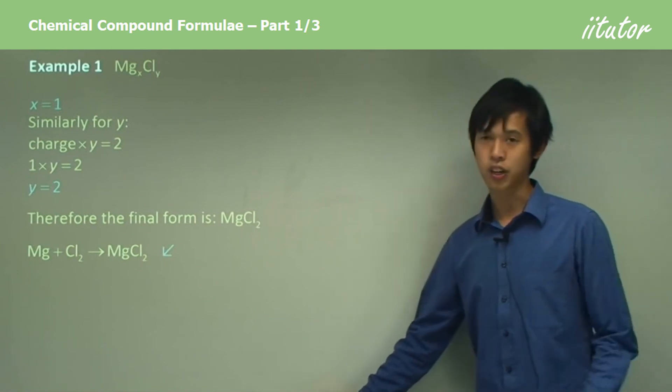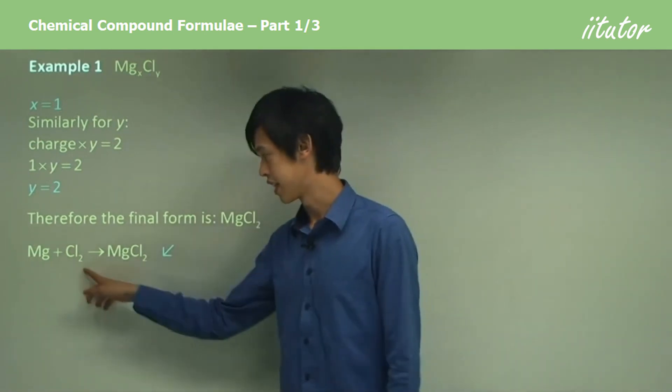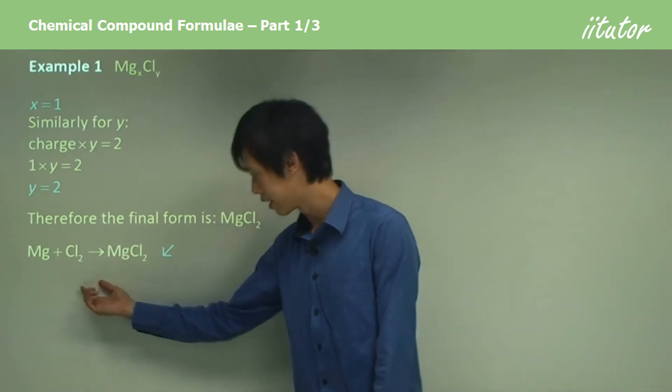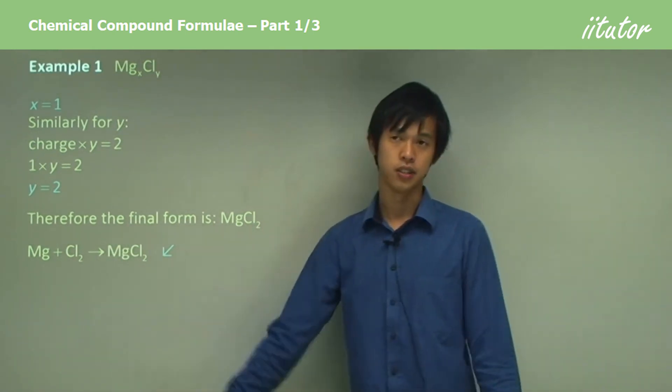The final equation then would be Mg plus Cl2, remembering that chlorine exists as a diatomic gas, that goes straight to MgCl2.